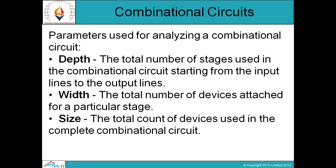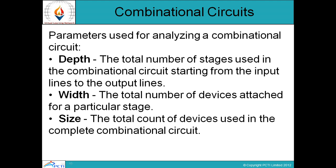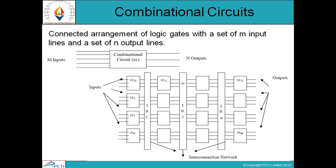The parameters used for analyzing a combinational circuit are: first, depth — the total number of stages used in the combinational circuit starting from the input line to the output line. In our example, the depth of this circuit is 4, as we have 4 combinational circuit stages from input to output.